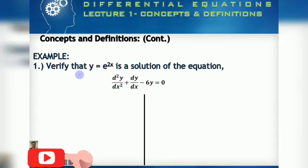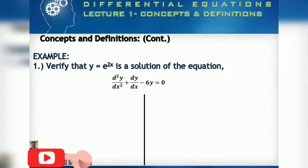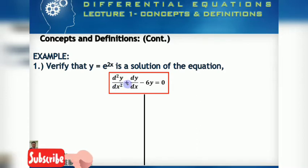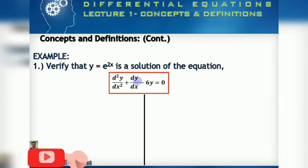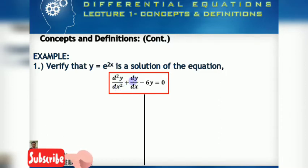We will now verify that y equals e raised to the 2x is a solution of the differential equation: second derivative of y with respect to x plus first derivative of y with respect to x minus 6y equals zero. To verify, we must determine dy over dx and the second derivative of y with respect to x.